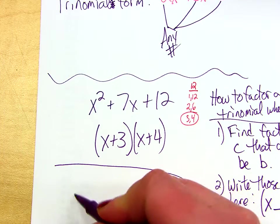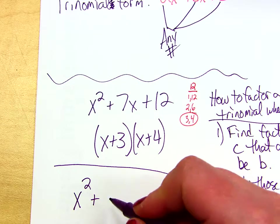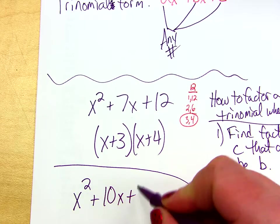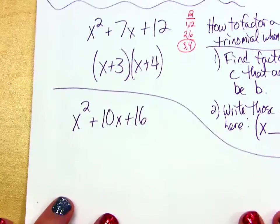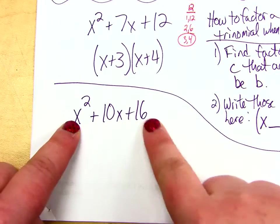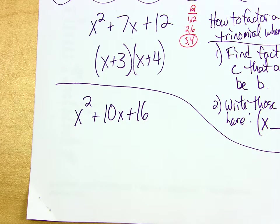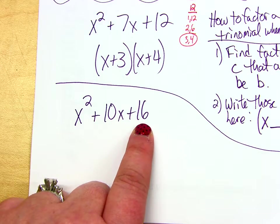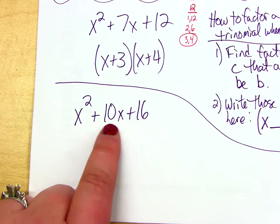Try this one. X squared plus 10x plus 16. I'm giving you, here's the original problem. So this is where you start. And now you need to list factors of 16 and find the pair that adds up to be 10.